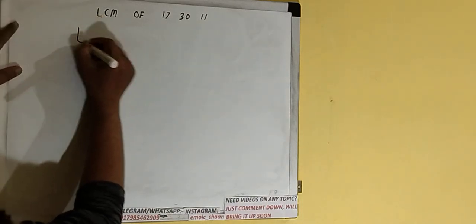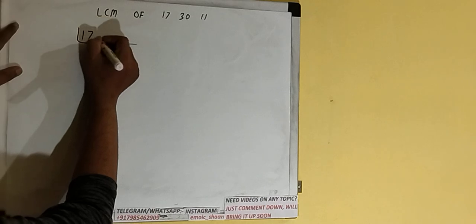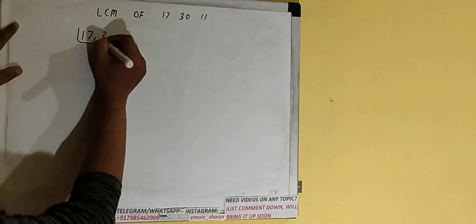Hello friends, in this video I'll be helping you with the LCM of the numbers 17, 30, and 11. So let's start. First of all, we need to write down all three numbers like this: 17, 30, 11.